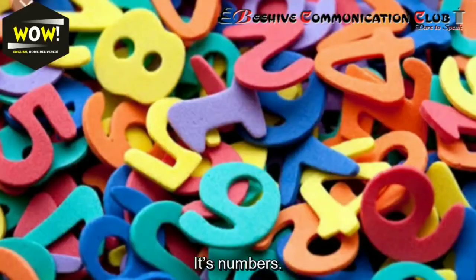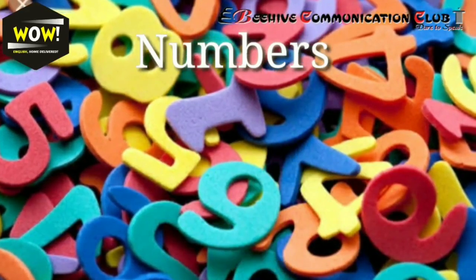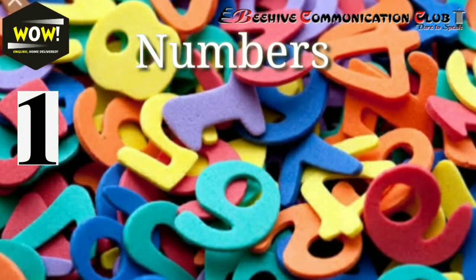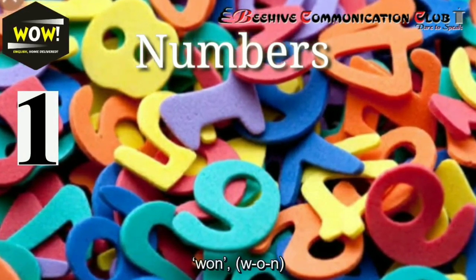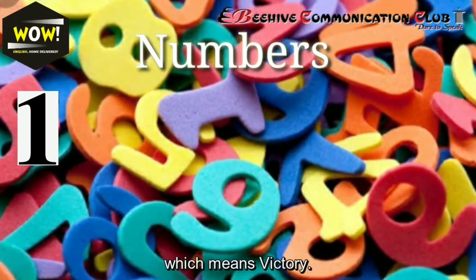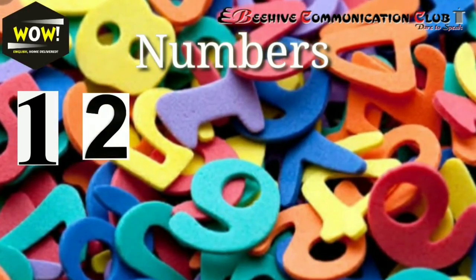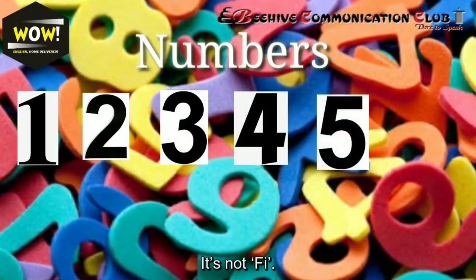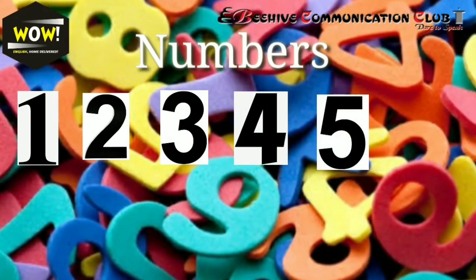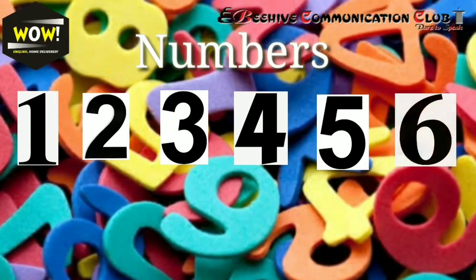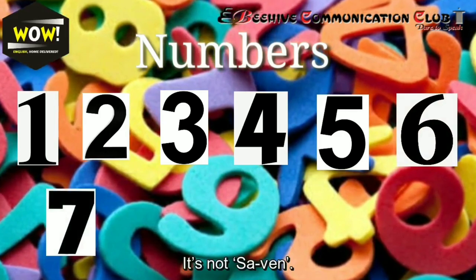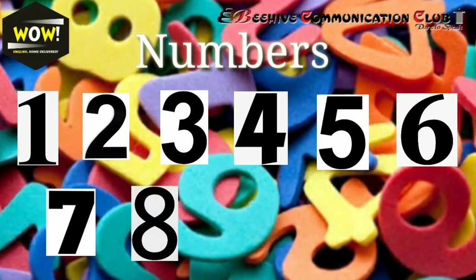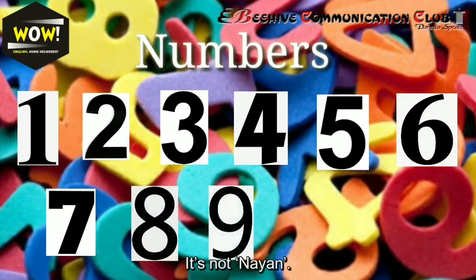Guess what we are going to do now — it's numbers! Repeat after me. One — it's not 'one' like 'own,' it's 'wun,' rhyming with the word 'won' (W-O-N), which means victory. Two, three, four. Five — it's not 'faive,' it's 'five.' Six. Seven — it's not 'sev-en,' it's 'seven.' Eight, eight, eight. Nine — it's not 'nain,' it's 'nine.'